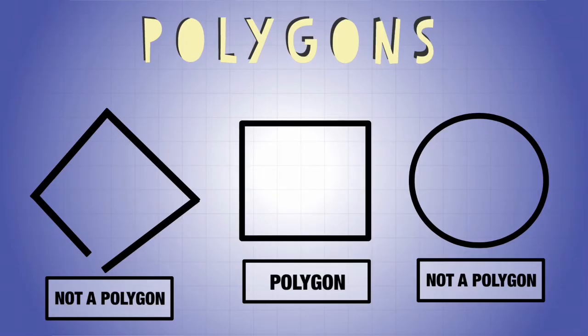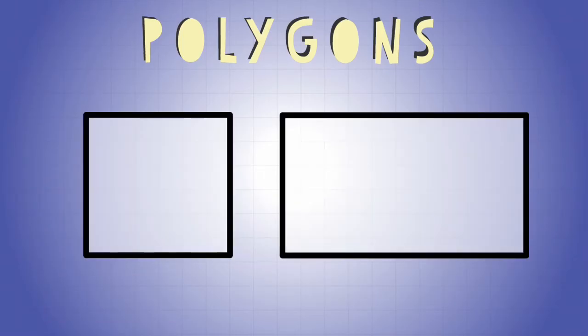Now there are two types of polygons: there are regular and irregular polygons. So let's first look at the regular. A regular polygon is when all sides are the same length. That is a regular polygon.